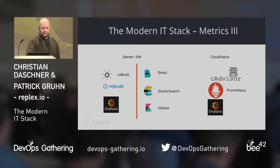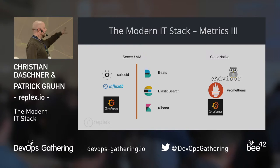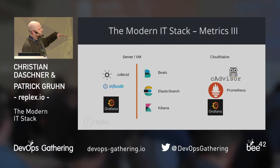Now we do this with tools like CollectD, InfluxDB, or Grafana for on-premise systems. Or the newer toolset: Metric Beats, Elasticsearch, and Kibana. Or a cloud-native stack with cAdvisor and Prometheus as the datastore and Grafana to visualize the data.